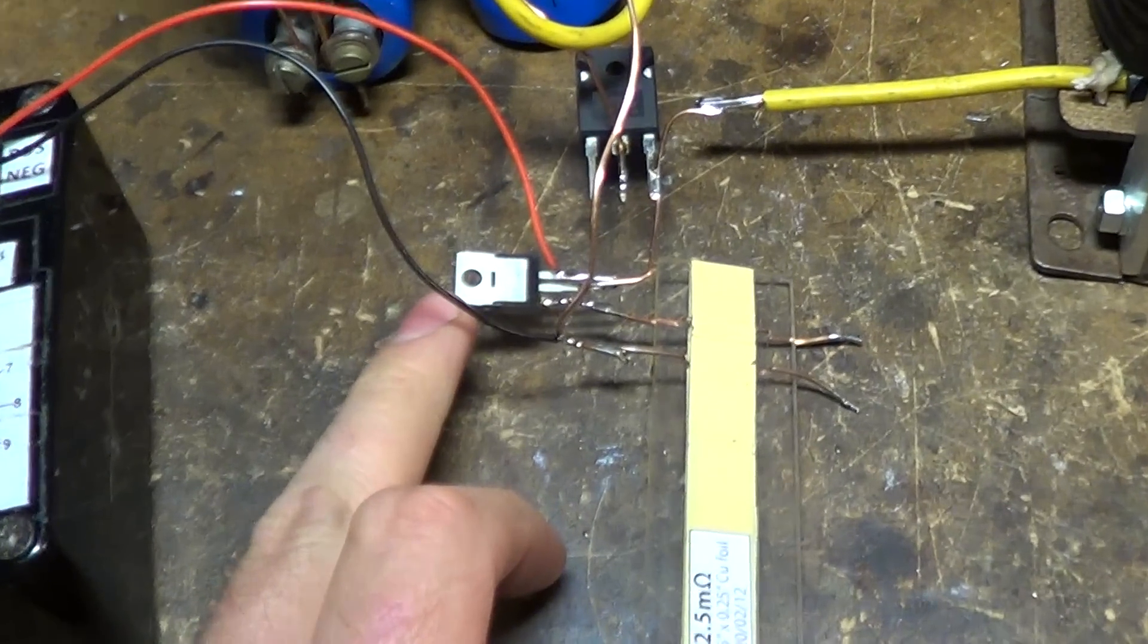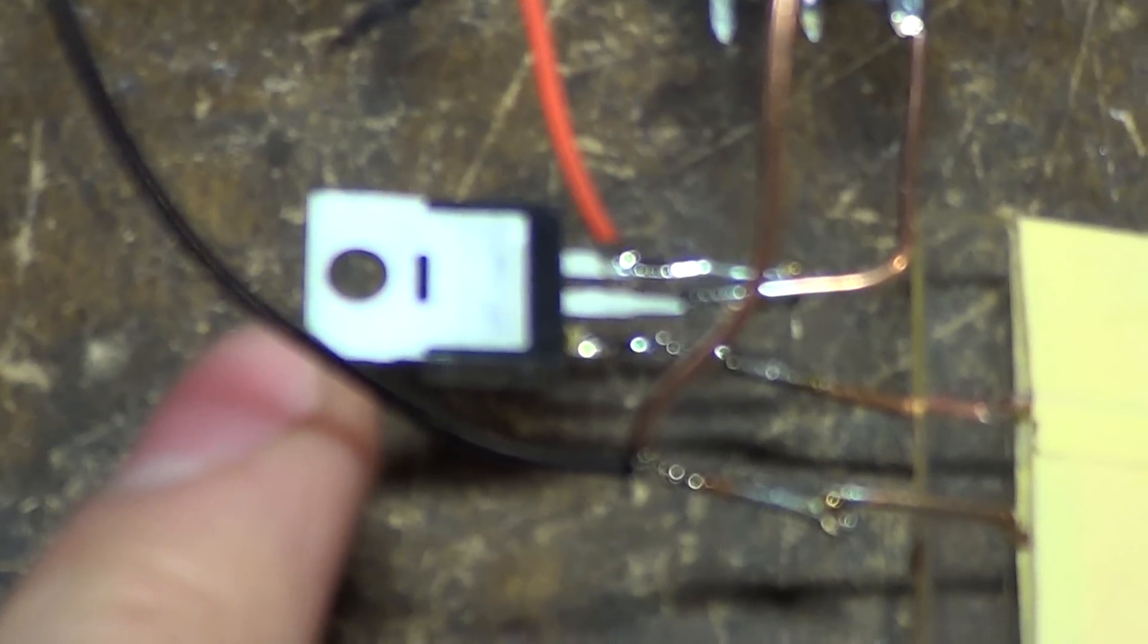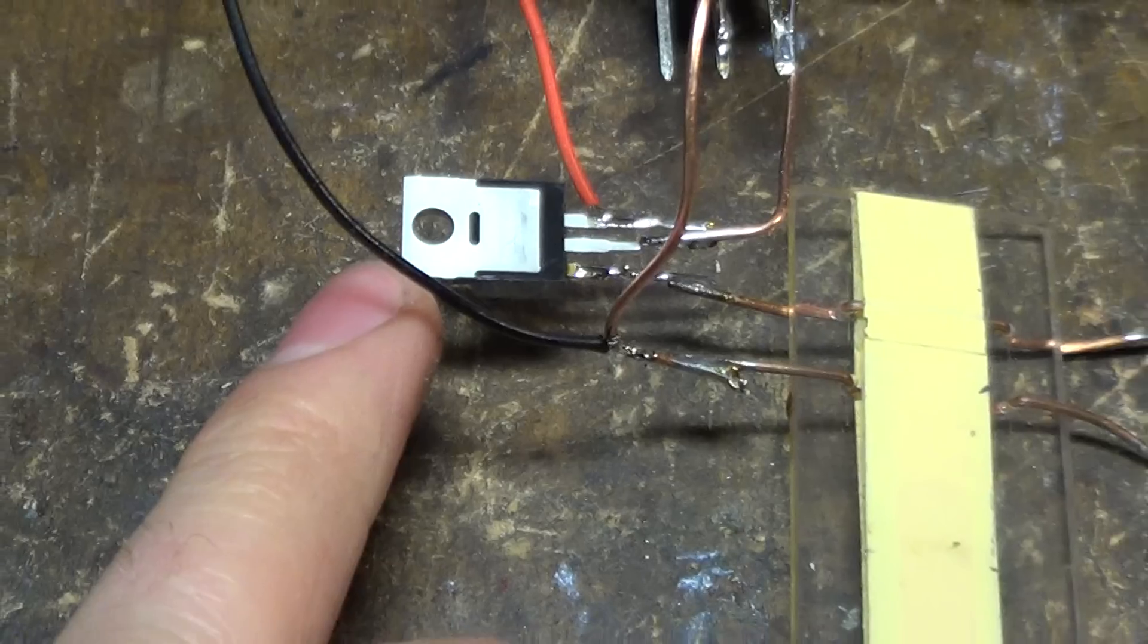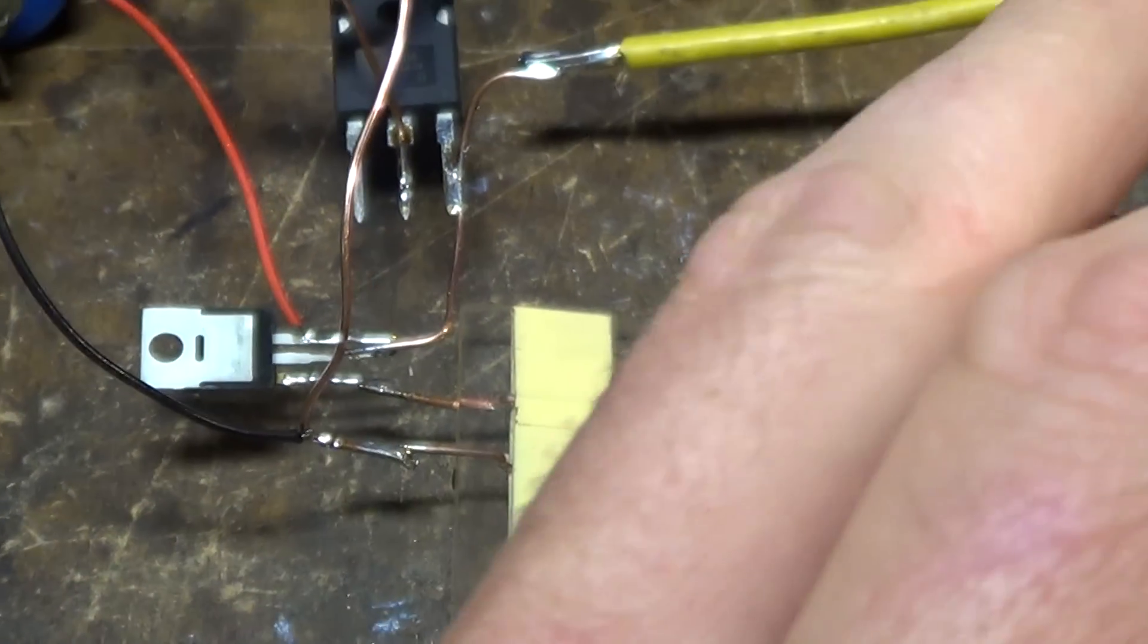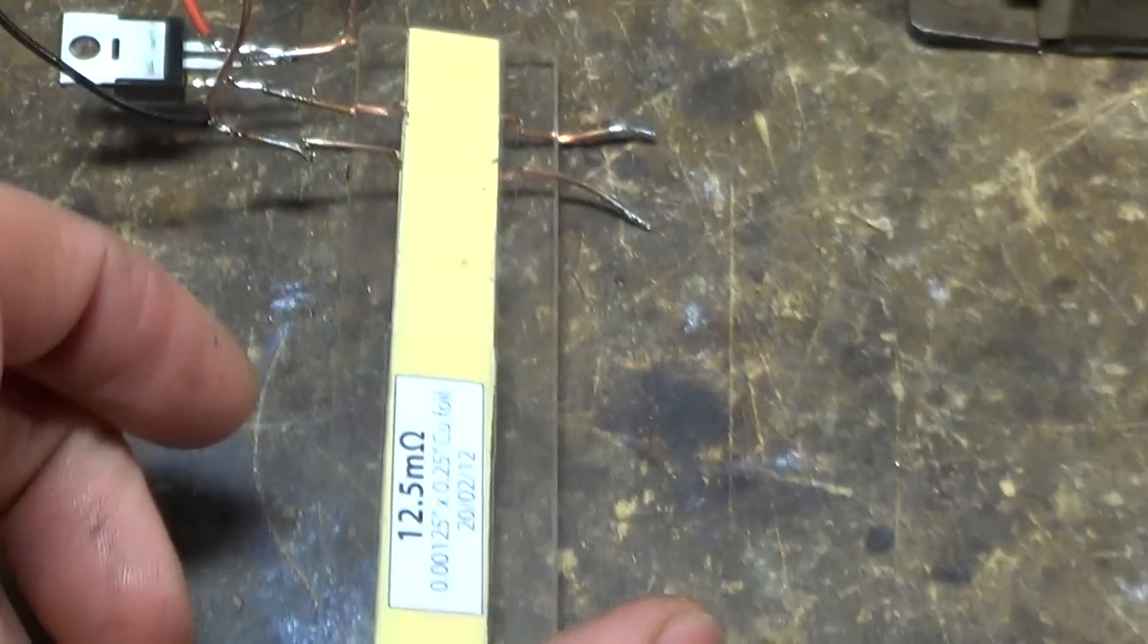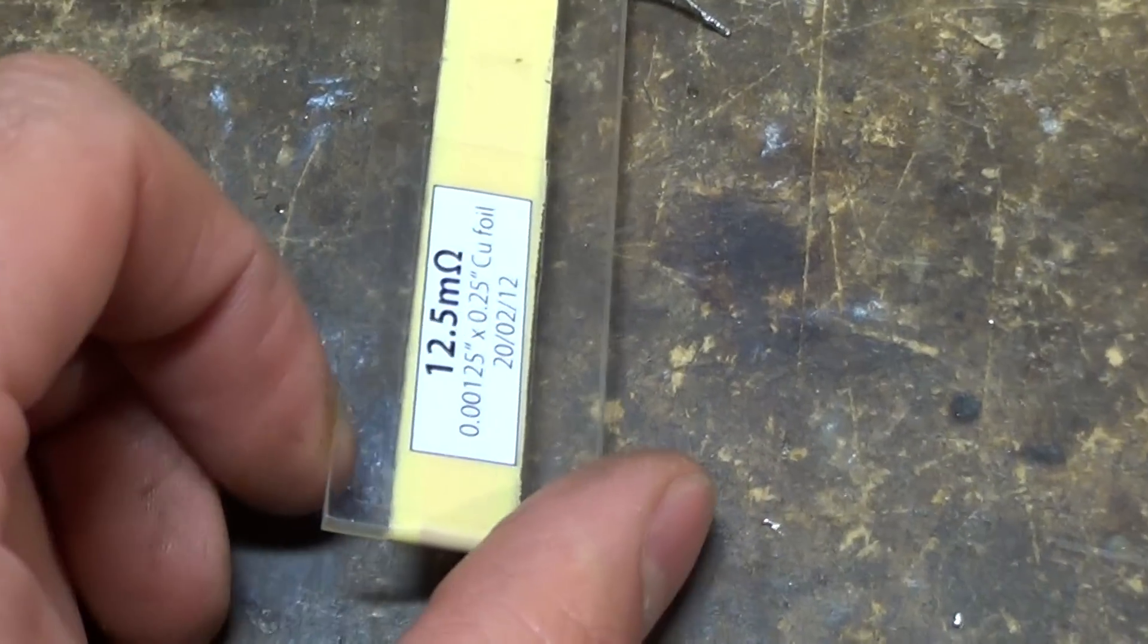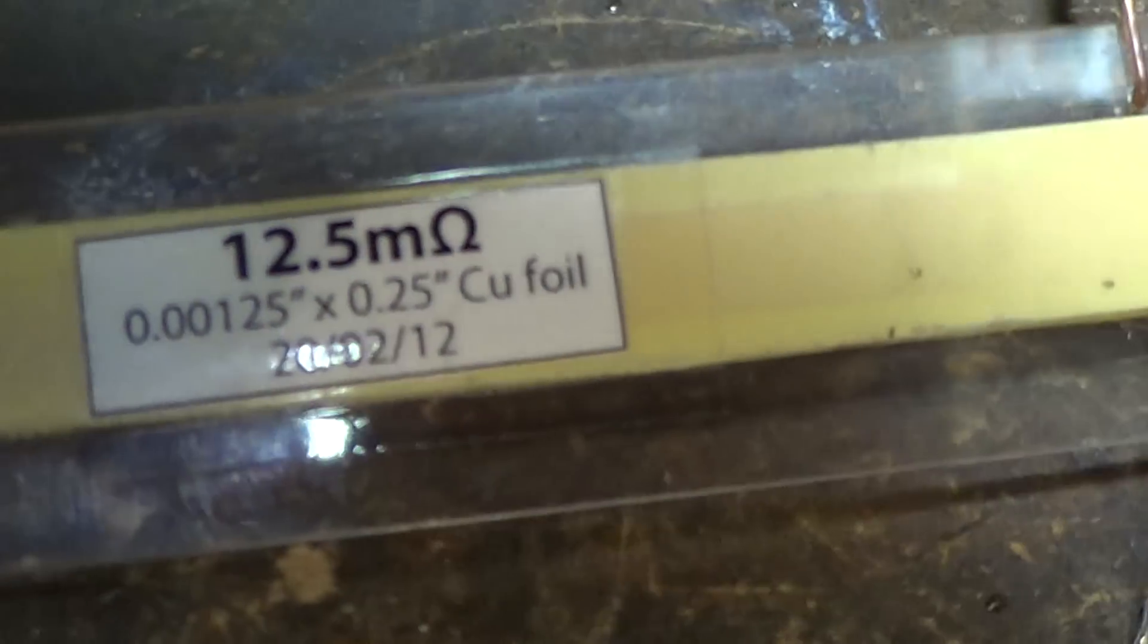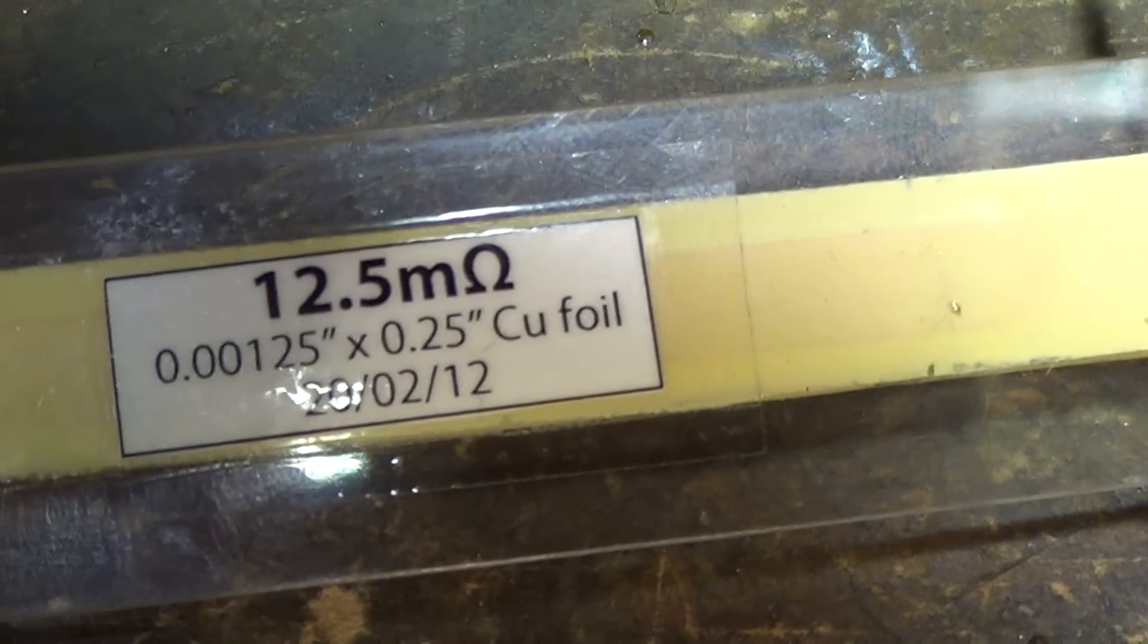And there's a power MOSFET which switches the inductor on or off, and a current sensor resistor, 12.5 milliohms, to measure the current pulse.